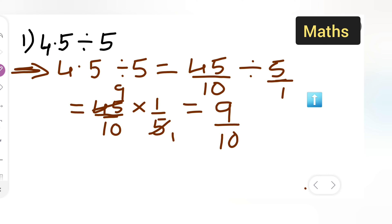9 upon 10 which is going to give you 0.9. So I hope you all have understood how to divide 4.5 divided by 5.